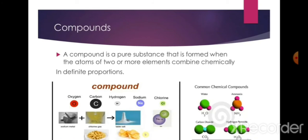A compound is a pure substance that is formed when the atoms of two or more elements combine chemically in fixed proportions. Compounds exhibit properties entirely different from the properties of their constituent elements. For example, the atoms of hydrogen and oxygen combine chemically in a fixed ratio to form the compound water.